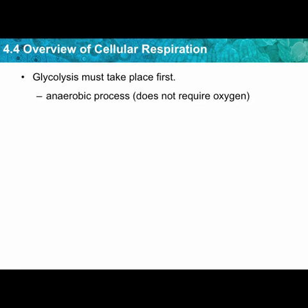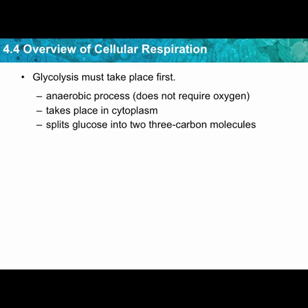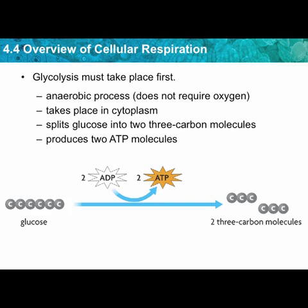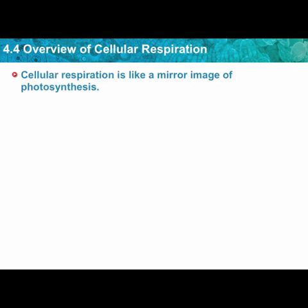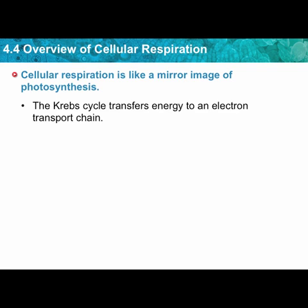Glycolysis is an anaerobic process, which does not require oxygen, and it takes place in the cytoplasm before the sugar actually enters the mitochondria. It splits glucose into two three-carbon molecules and produces two ATP molecules. Out in the cytoplasm, glucose starts the process: two ADPs are converted into ATP and the six-carbon glucose is broken down into two three-carbon molecules.